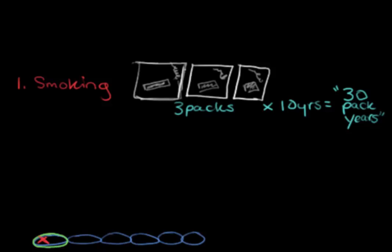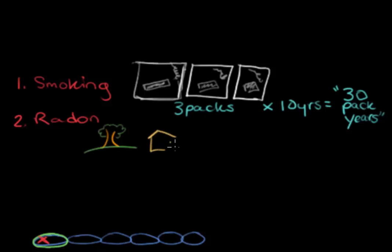Another mutation source is radon, a naturally occurring gas found in the atmosphere that we're breathing in all the time. It comes from a chemical in the soil that when it breaks down releases this colorless, odorless gas into the environment. Radon can become trapped in houses, particularly in basements, and can build up to a high enough concentration to cause lung cancer.